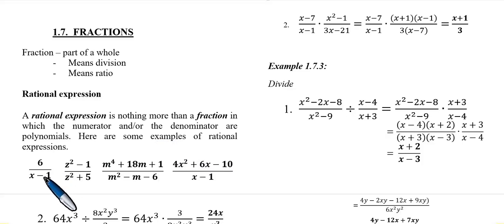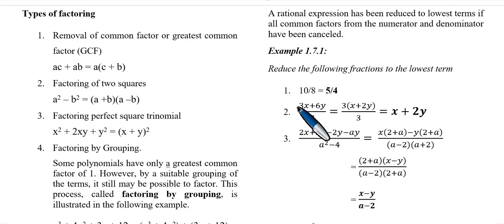A rational expression is nothing more than a fraction in which the numerator and or the denominator are polynomials. Here are some examples of rational expressions: 6 over x minus 1, z square minus 1 over z square plus 5. If you notice the definition, may polynomials in the numerator or denominator, or both.